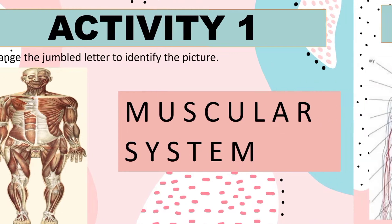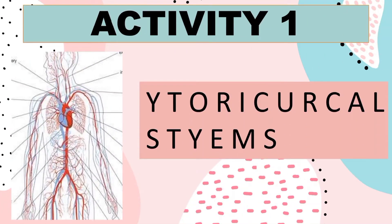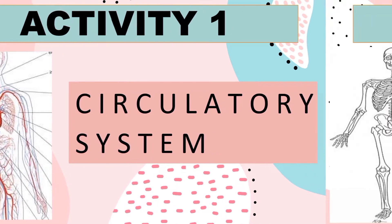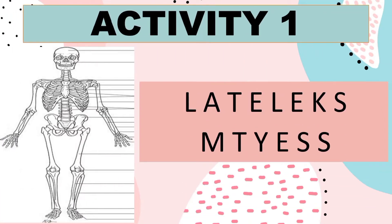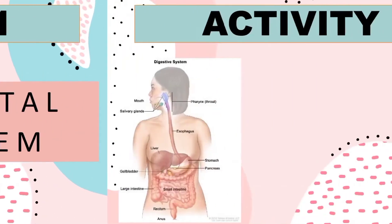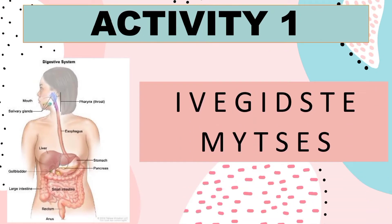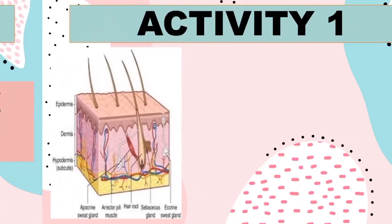This picture shows our muscular system. Next picture! Correct! This picture shows our circulatory system. What about the next picture? This picture shows our skeletal system. Let's proceed to the next picture. Correct! This picture shows our digestive system.